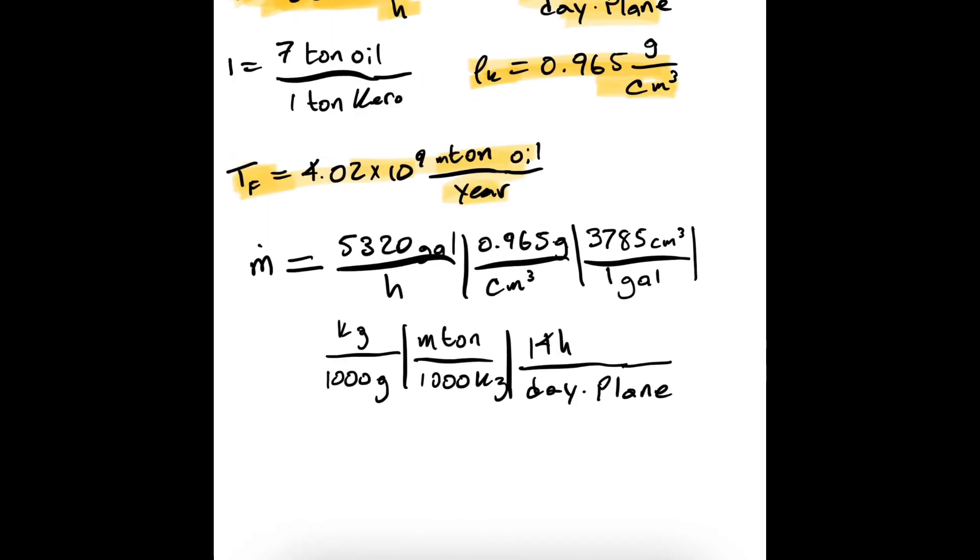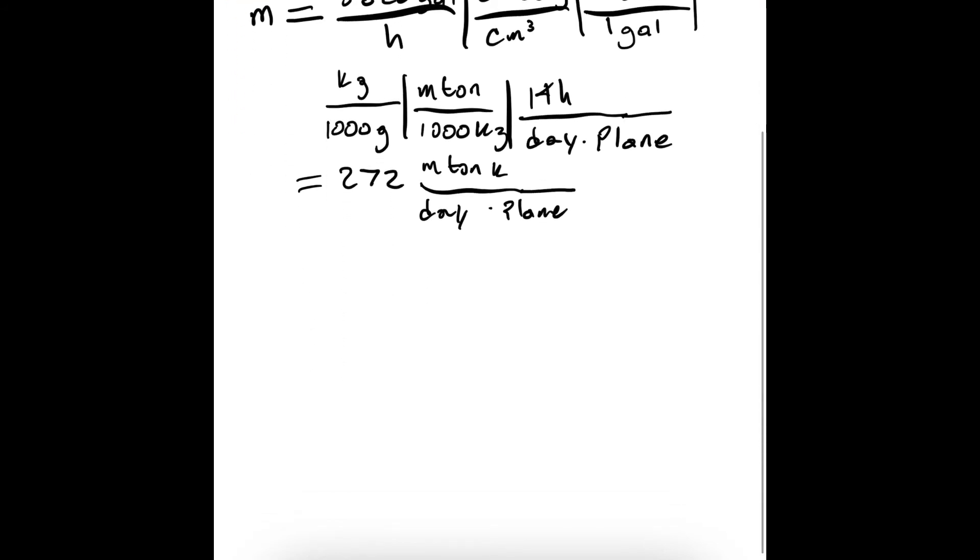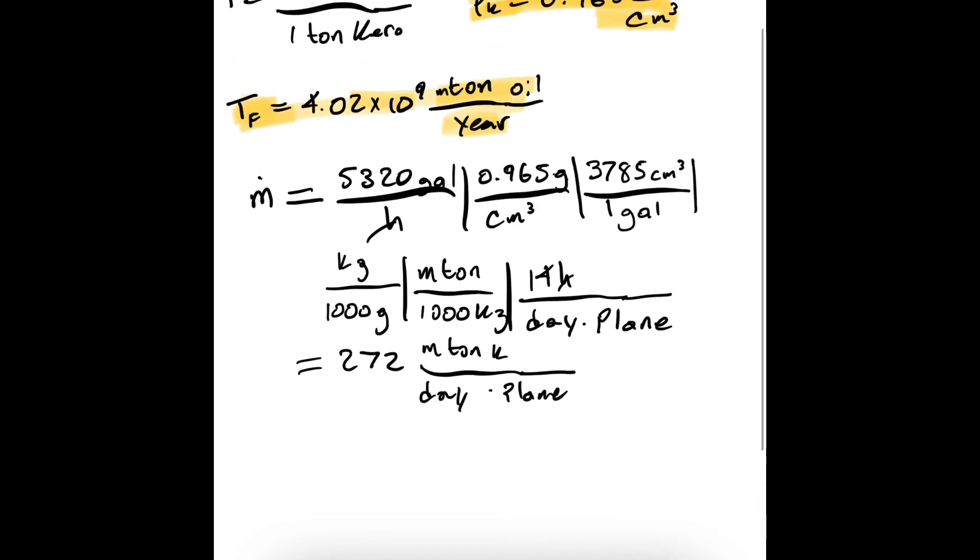We'll continue down here on the next line. So now we've got our whole equation written out. Now we just pull out our calculators and write down the answer. That's 2.72 metric tons of kerosene per day per plane.